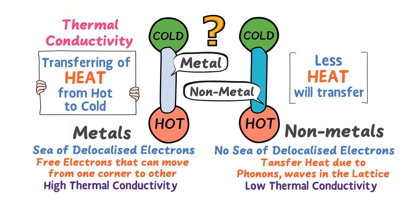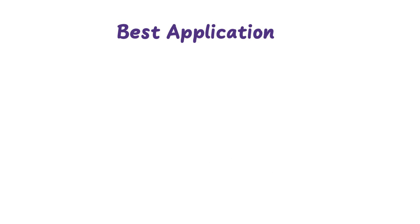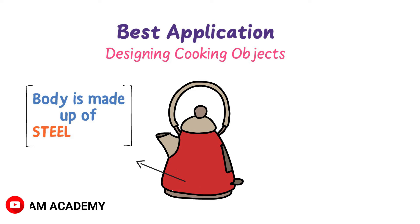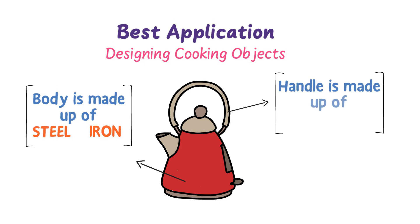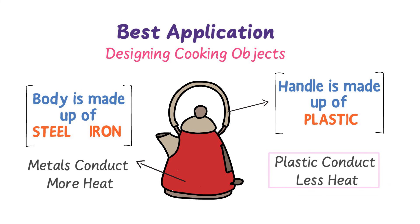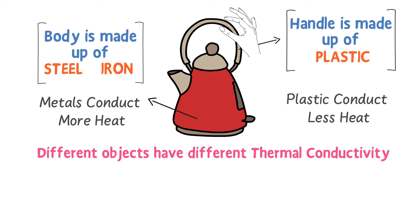One of the best applications of thermal conductivity is designing cooking objects like this kettle. Its body is made up of metal like steel or iron, because metal conducts more heat and water or tea will absorb more heat, thus reducing the cooking period. Its handle is made up of plastic because plastic conducts less heat, so when we touch the handle less heat will transfer to our hand.